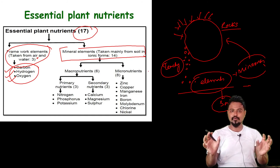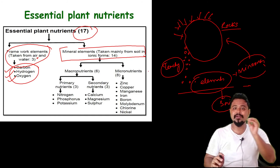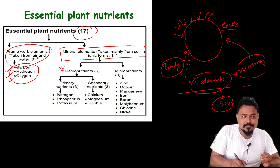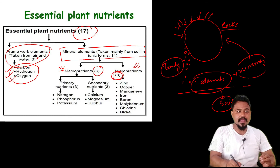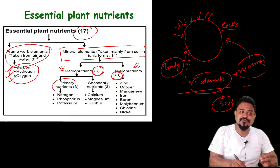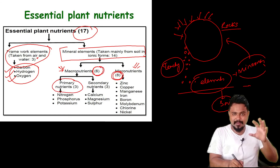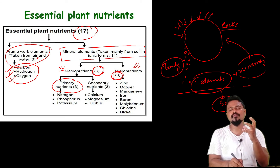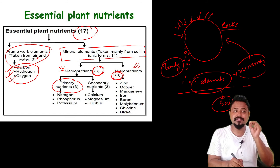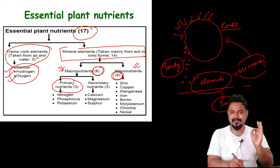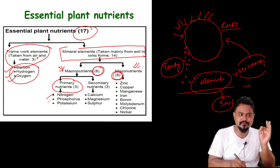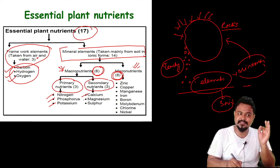These 14 mineral elements are divided into two groups: macronutrients and micronutrients. Macronutrients are 6 and micronutrients are 8. Macronutrients are further classified as primary nutrients — nitrogen, phosphorus and potassium — and secondary nutrients: calcium, magnesium and sulfur.